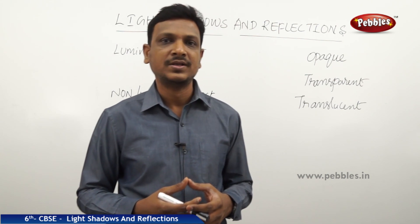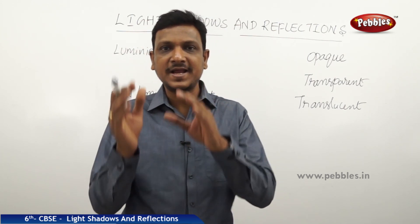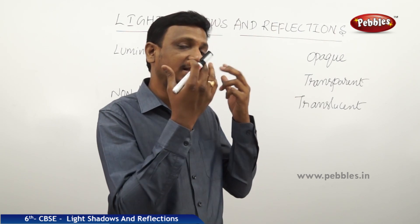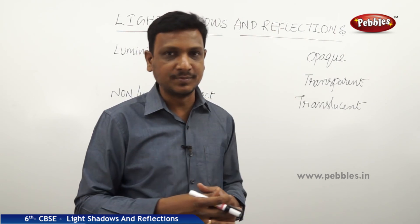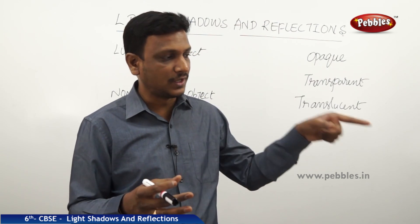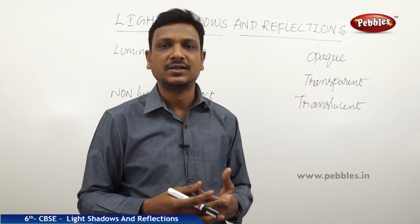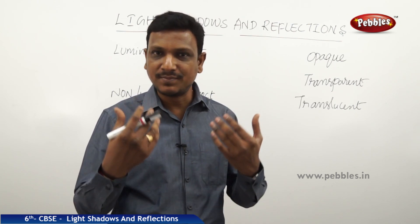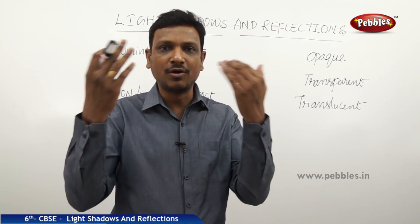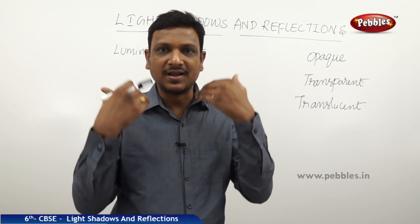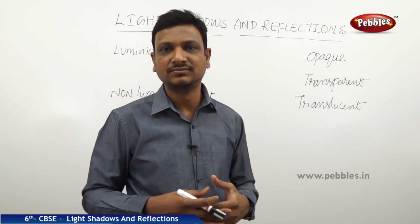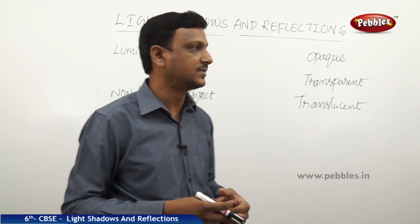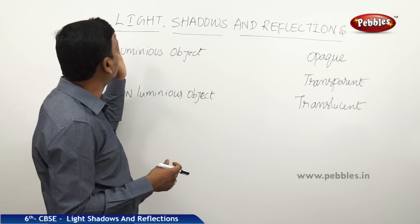How are we able to see things? When light falls on an object, the light gets reflected to our eyes — we see the reflection, and by that we can see the object. If no light falls on that object, you cannot see it. The light falling on my face reaches your eyes, and that is how you are able to see me. That is the way light helps us to see things.